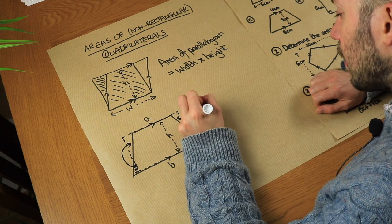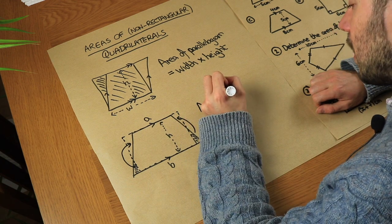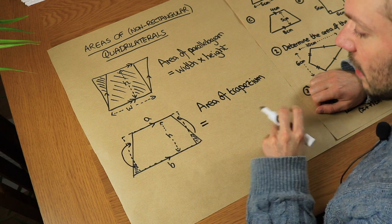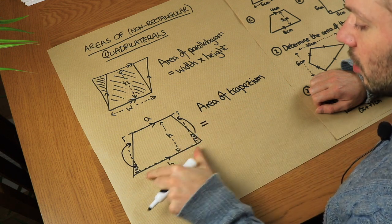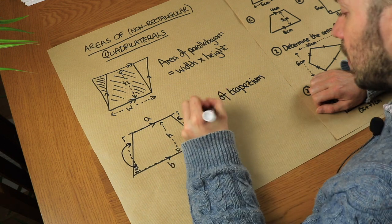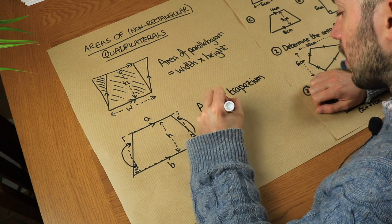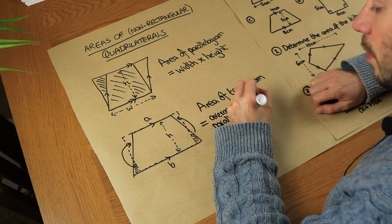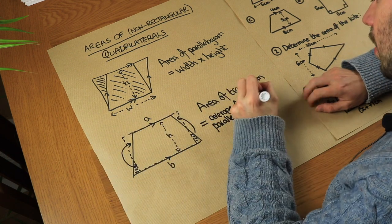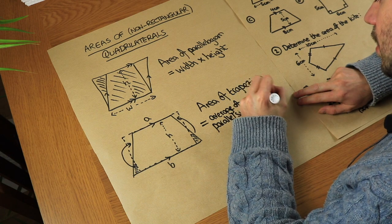So the area of a trapezium is effectively that of a rectangle where, instead of the base, we use the average of the parallel sides, and then we multiply by the height between them — just like with a rectangle.